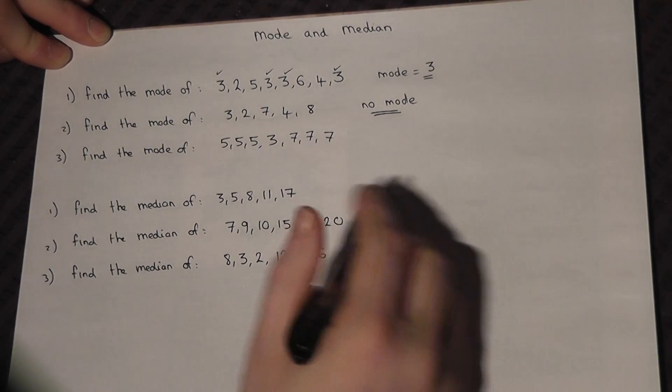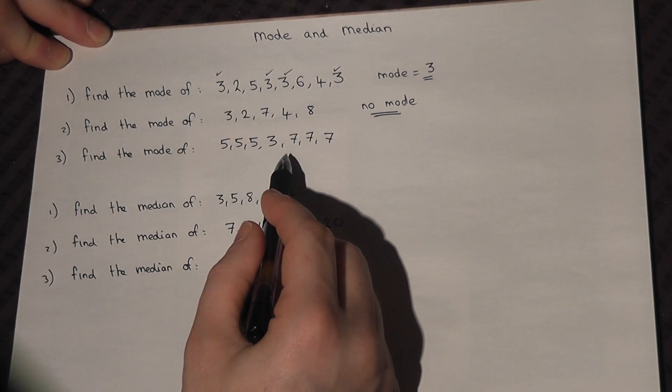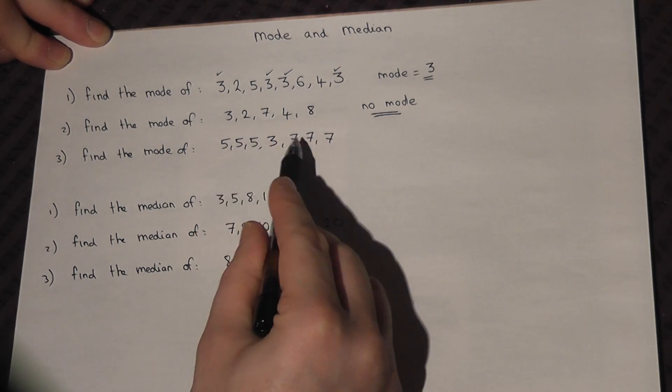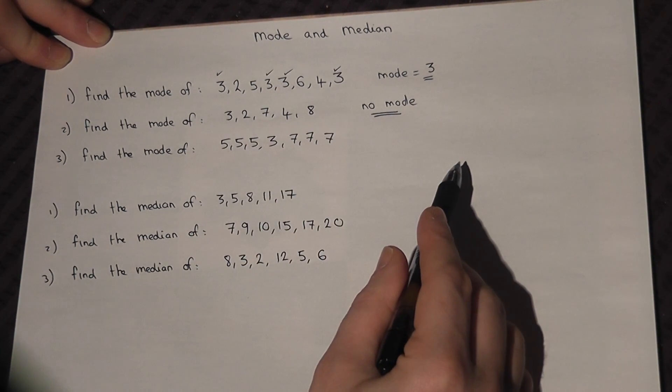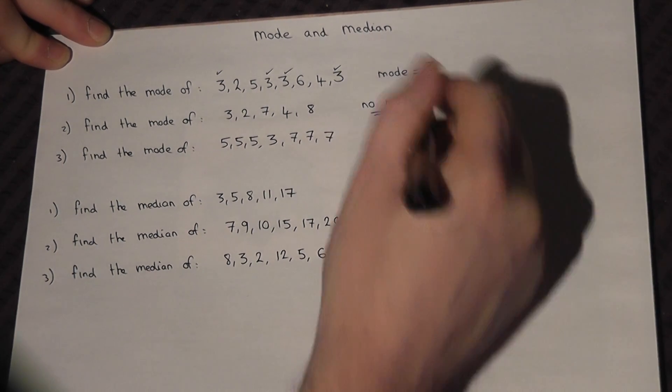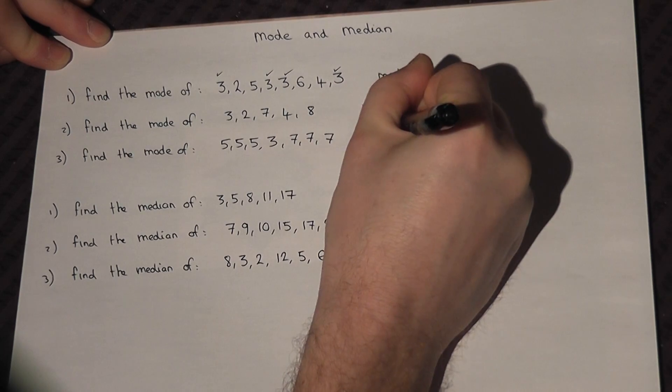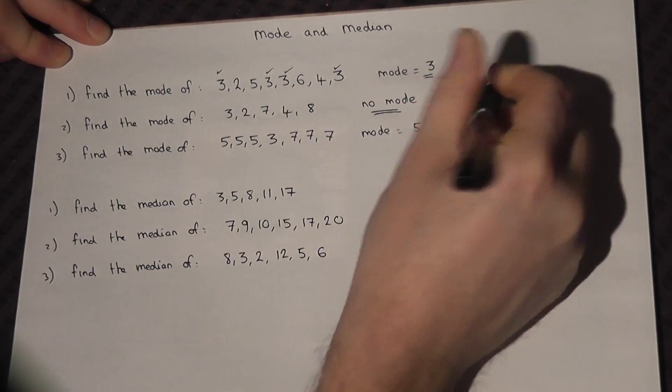And then in the third example, the 3 occurs only once, but the 5 and the 7 occur 3 times. So in this case, there are two modes. The mode is equal to 5 and 7.